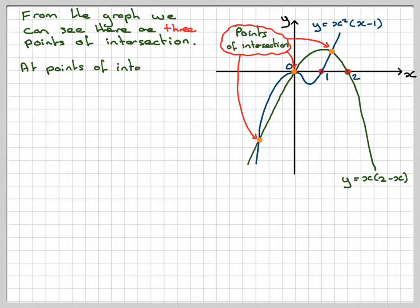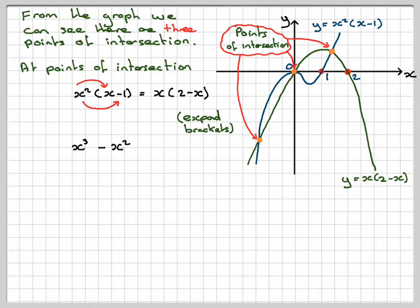At the points of intersection, x²(x-1) will equal x(2-x). So we're forming an equation. To solve that, we need to expand the brackets. So x² times x gives me x³, x² times -1 gives me -x², x times 2 gives me 2x, and x times -x gives me -x². The -x² terms cancel out. So we're going to have x³ - 2x = 0.